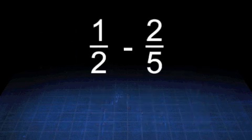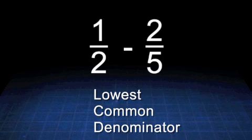Here's another example but with subtraction. 1 half minus 2 fifths. We can't do it because the denominators are not equal. We have to find the lowest common denominator or the LCD for short.